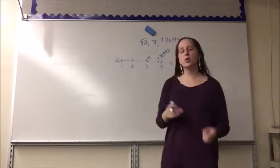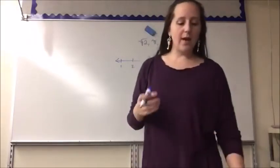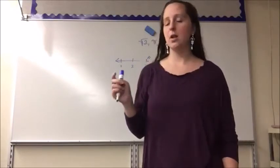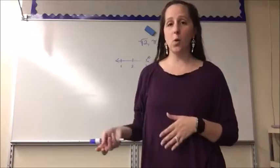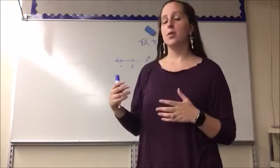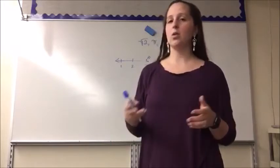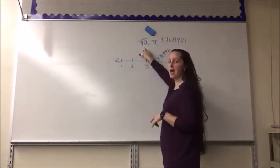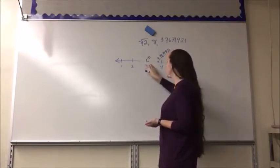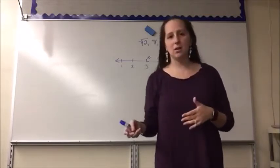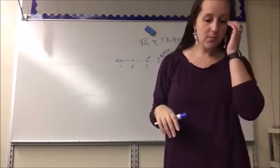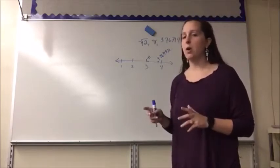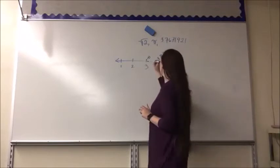For the square root of 12, I think about perfect square roots. The square root of 9 is 3 and the square root of 16 is 4, so the square root of 12 falls between 3 and 4. Using a calculator, the square root of 12 is approximately 3.4. Since 12 is roughly in the middle of 9 and 16, it lands around 3.4 to 3.5 on the number line.